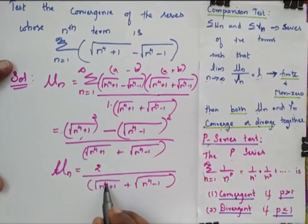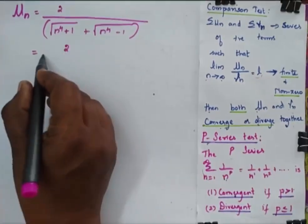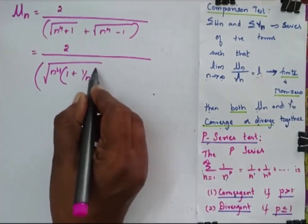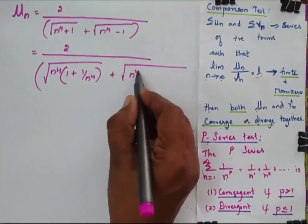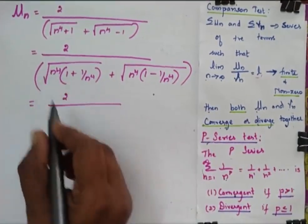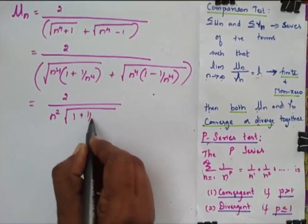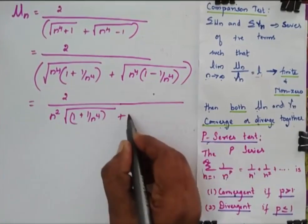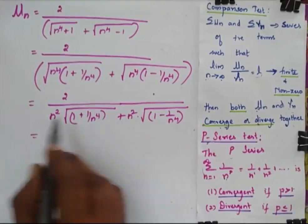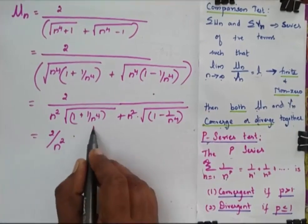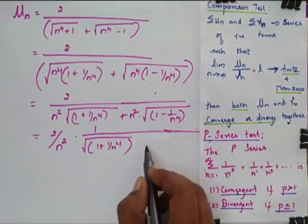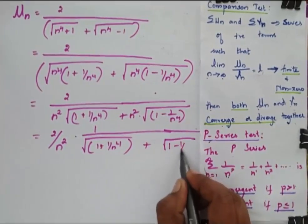Now I take n power 4 commonly outside from the denominator. When I take n power 4 outside, I get square root of n power 4 into 1 plus 1 by n power 4, plus square root of n power 4 into 1 minus 1 by n power 4. Taking n power 4 out of the square root gives n squared, so the denominator becomes n squared times square root of 1 plus 1 by n power 4 plus square root of 1 minus 1 by n power 4. Therefore un equals 2 by n squared into square root of 1 plus 1 by n power 4 plus square root of 1 minus 1 by n power 4.